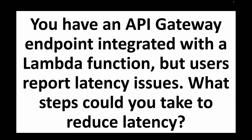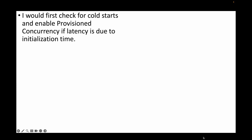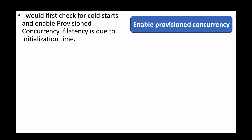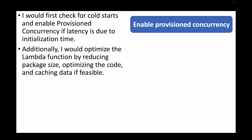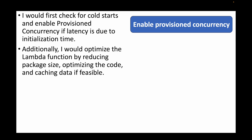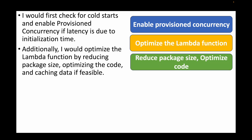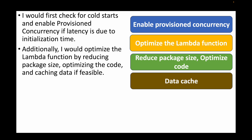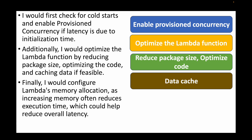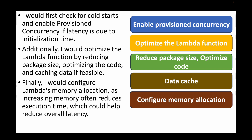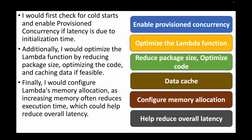The next question: you have an API Gateway endpoint integrated with a Lambda function but users report latency issues — what steps could you take to reduce latency? First, check for cold starts and enable provisioned concurrency if latency is due to initialization time. You can also optimize the Lambda function by reducing the package size or optimizing the code itself. Enable caching for feasible data, and consider increasing Lambda's memory allocation, which may reduce execution time and overall response latency.